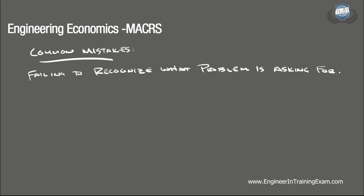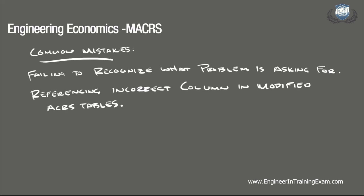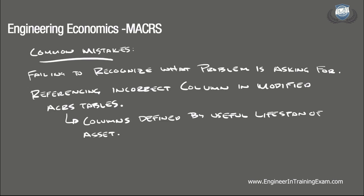Another common mistake is referencing the incorrect column when using the modified ACRS tables. The columns are defined by the lifespan of the asset you are analyzing. In this case, we were analyzing an asset with a 7-year recovery period. If we were to reference any other column other than the 7-year column, we would significantly throw off our analysis.